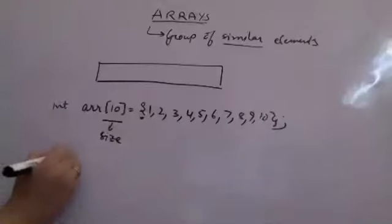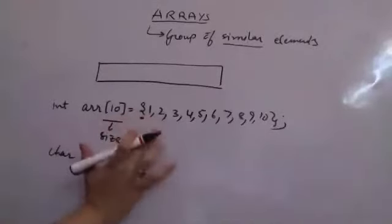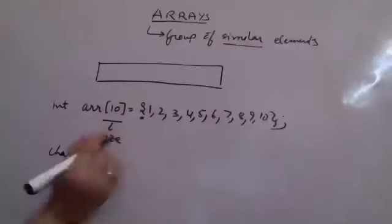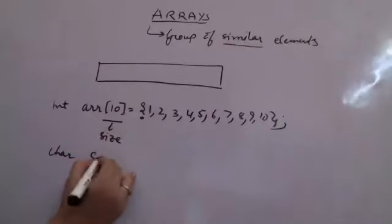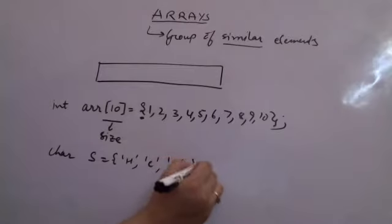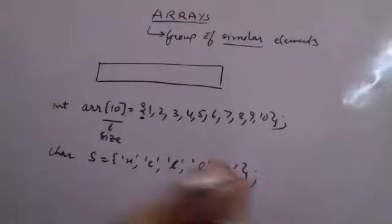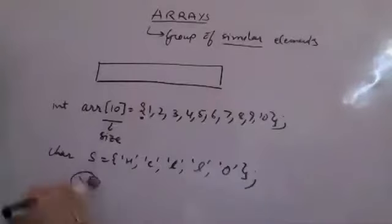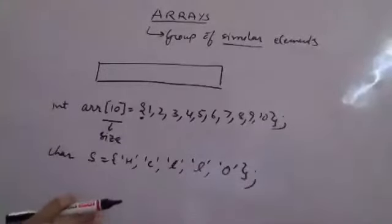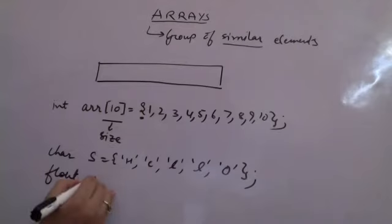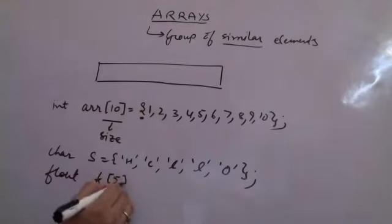I can also initialize the array using curly brackets with elements separated by commas. It can be an integer or a character. If I am initializing along with the declaration, the size is optional. For a character array like 'hello', a backslash-zero null character would be added by the compiler. I can also declare without initialization, like float F[5].